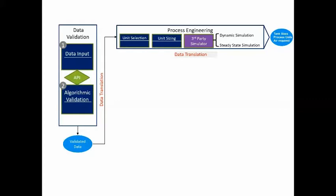Once we've selected and sized the units, we run a simulation, and we do both dynamic and steady state simulations. We use a third-party simulator. We can use any simulator that you or your company uses. And at the end of this process, we have a set of outputs, which are the tank sizes, the process units, and the air requirement for that wastewater treatment plant.